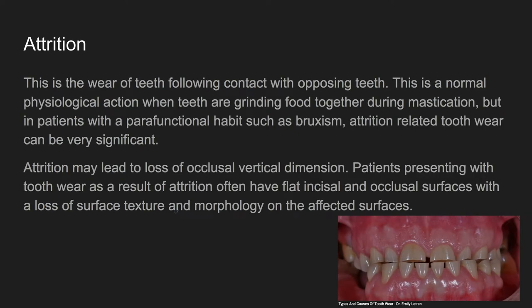To begin with, attrition is the wear of teeth following contact with opposing teeth. This is a normal physiological action when teeth are grinding food together during mastication, for example. In patients with parafunctional habits such as bruxism, attrition-related tooth wear can be very significant. Attrition may lead to loss of occlusal vertical dimension, which is the distance between the base of the nose and the chin. Patients presenting with attrition often have flat incisal and occlusal surfaces with loss of surface texture and morphology.